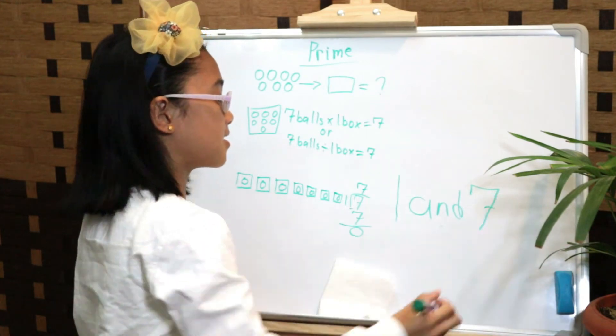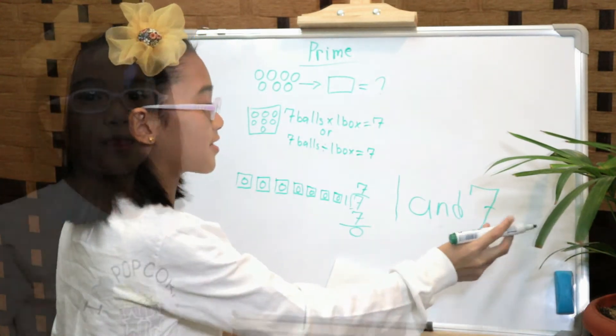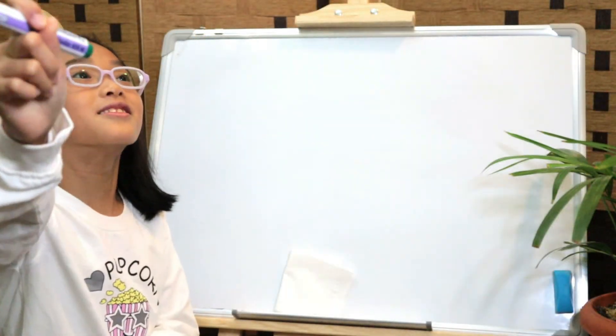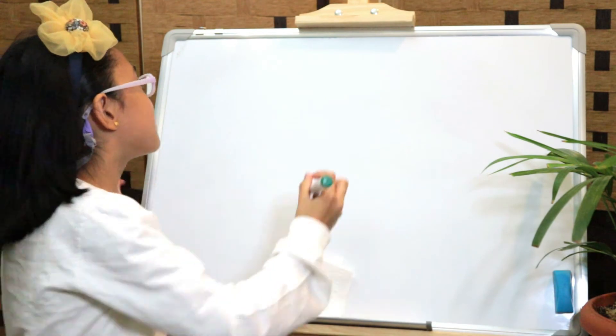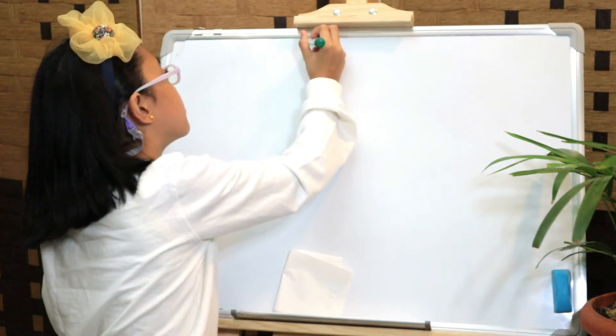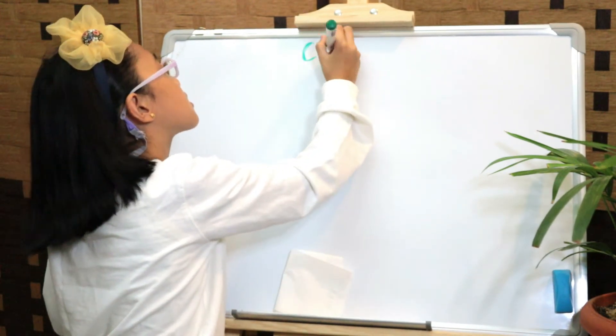So we can say that one and seven are the factors of seven.